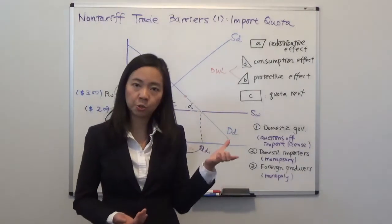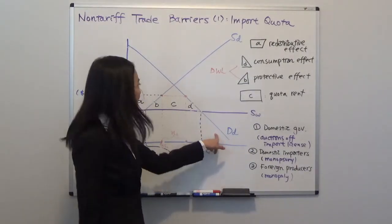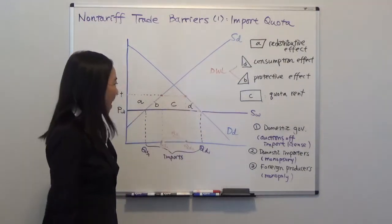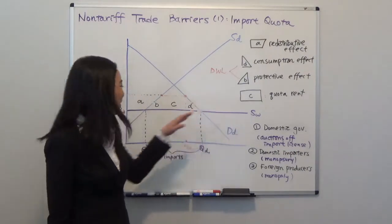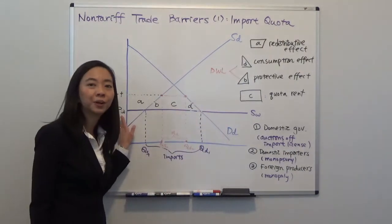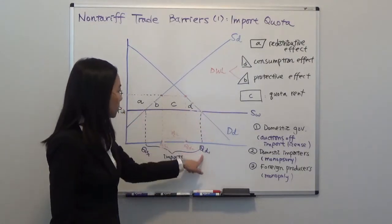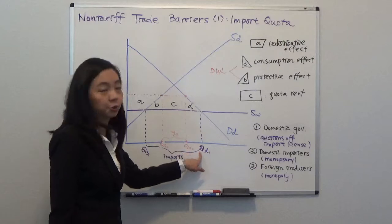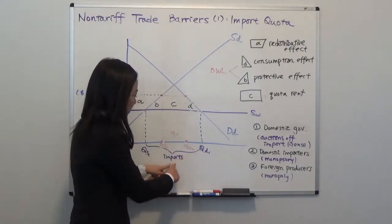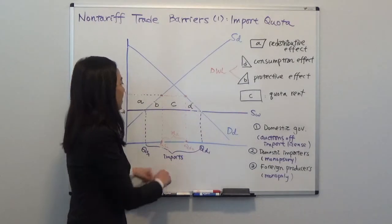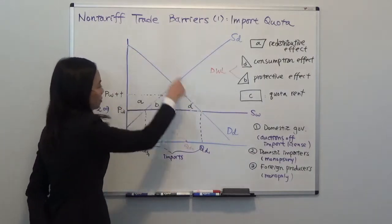So this is our graph, that's a domestic demand and domestic supply curve. And without quota restrictions, suppose the world supply is perfectly elastic and PW is your world price. So you can see given that price, your quantity demanded is QD1 and domestic quantity supply is QS1. So the difference will be the imports without quota restriction. And our consumer surplus will be this big triangle without quota restriction.